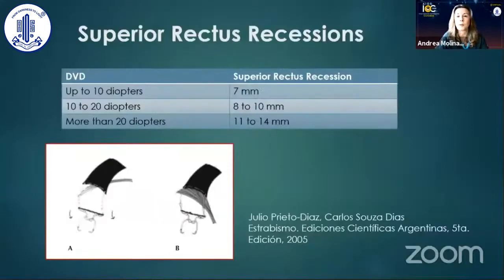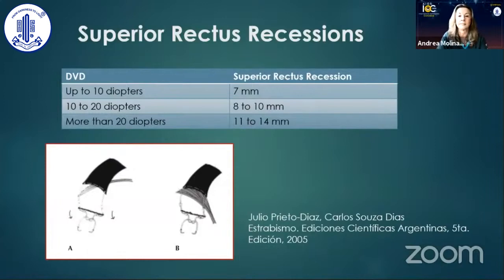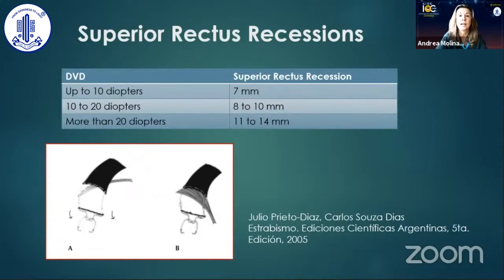Without doubt, the most popular procedure for DVD is superior rectus recession. Many surgical tables have been proposed. These are the numbers I like to use for slight, moderate, or severe DVDs. Personally, I like to place fixed sutures because I think that in large recessions the muscle might fall back. But the problem is that in large superior rectus recession, the tendon of the superior oblique can interfere where you want to place your sutures. This is why Julio Prieto-Diaz from Argentina has proposed doing hangback sutures in these cases.